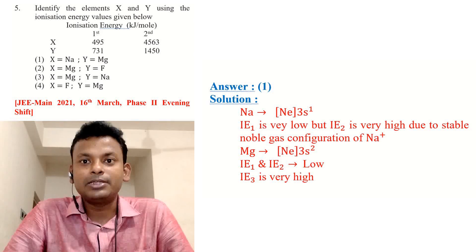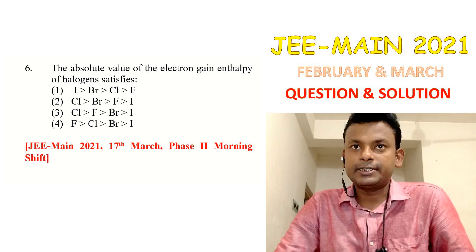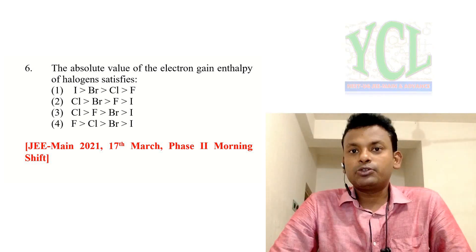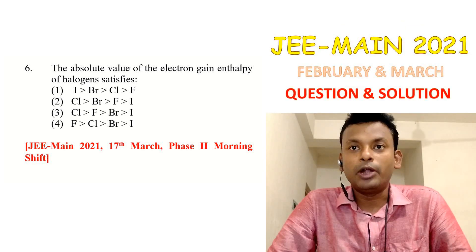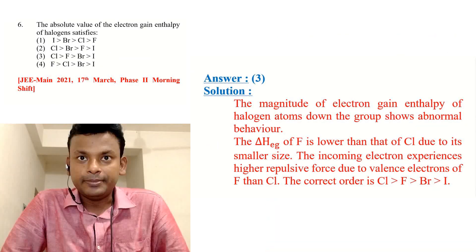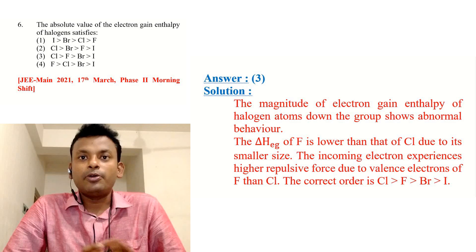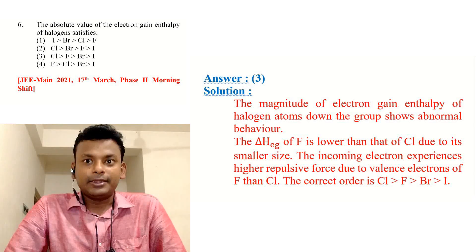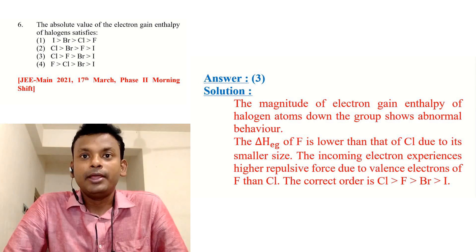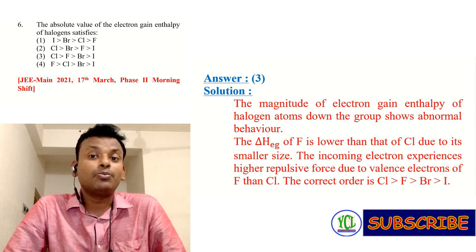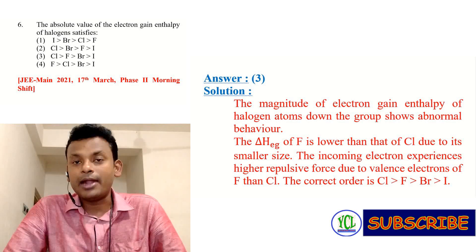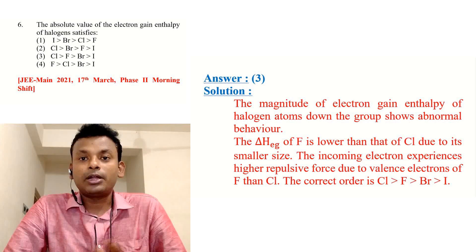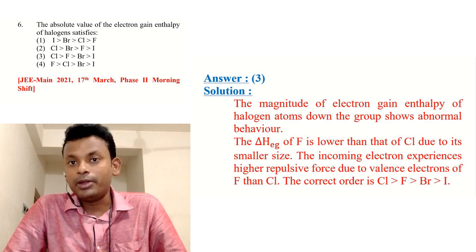In magnesium, the last shell electronic configuration is 3s². First and second ionization enthalpies are low, but the third is very high. Question 6: The absolute value of electron gain enthalpy of the halogens satisfies — options are given. This question was set in JEE Main 2021, 17th March, phase 2, morning shift. Answer is option 3. The electron gain enthalpy of fluorine is lower than that of chlorine due to the small size of fluorine — incoming electrons experience higher repulsive force from the valence electrons. Correct order: Cl > F > Br > I.